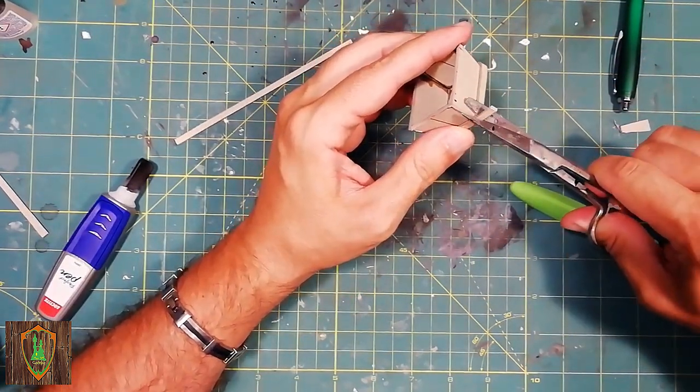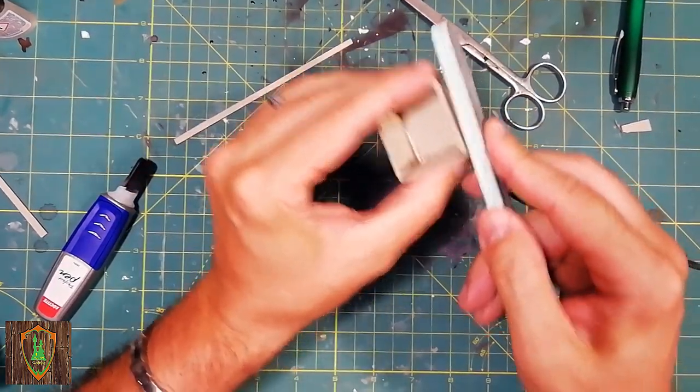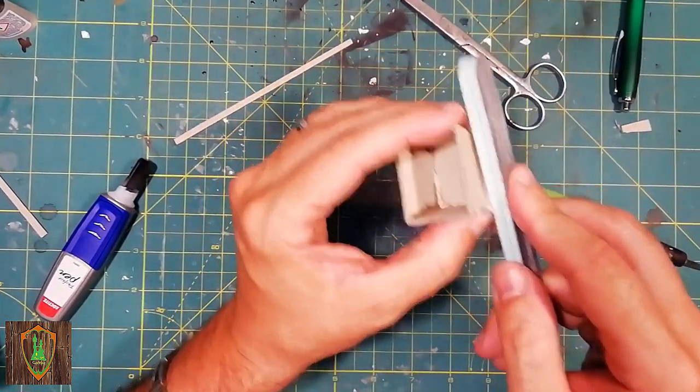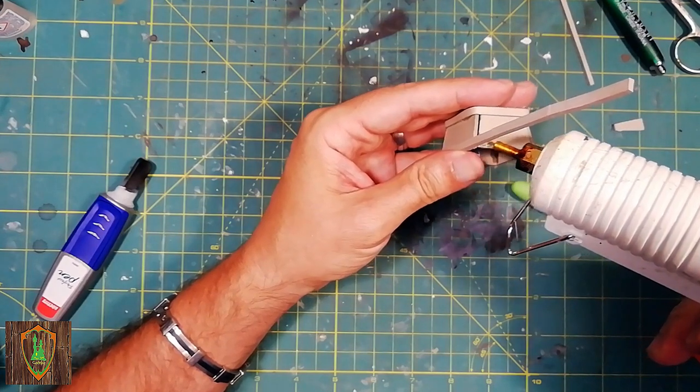In the end I cut the excess cardboard and I folded the end for a cleaner effect. For the upper bar I used the same procedure.